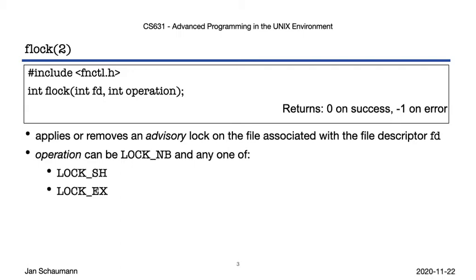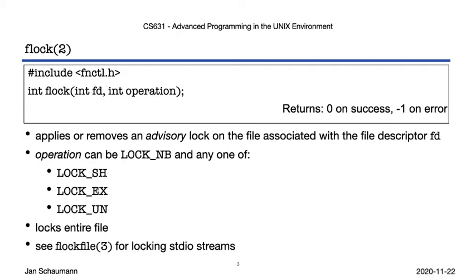If you have a shared lock and you are trying to upgrade to an exclusive lock, your shared lock is momentarily released, and another process might gain a hold of the lock before you. To unlock the file, you specify LOCK_UN. The locks controlled via flock apply to the entire file. We'll see another method of applying a lock only to a specific region of a file. Since these locks are applied to a file descriptor, we also have a way to lock a file stream via the flockfile function.